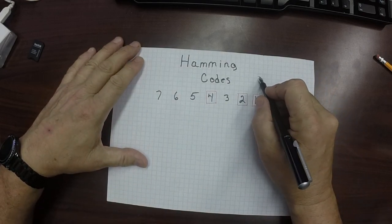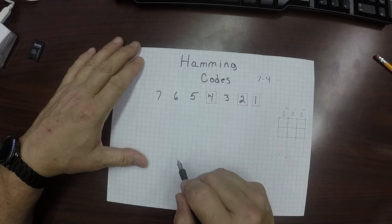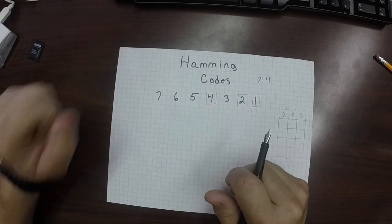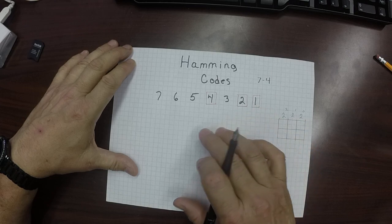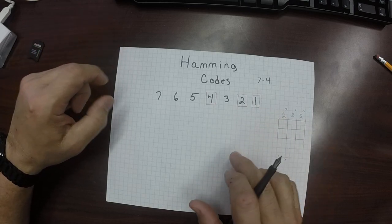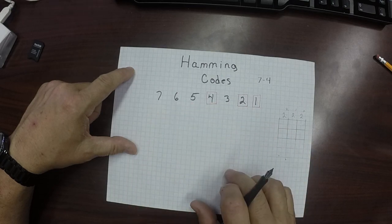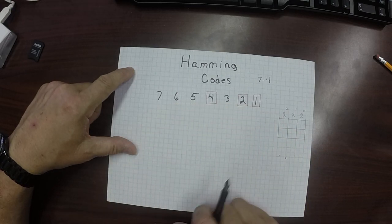So this is an example of a 7-4 Hamming code, and this is how you do it. The first thing you do is number the bits from 1 to 7. I've done it from both left to right and right to left. Hamming himself actually did it from right to left, which is what we have right here: 1, 2, 3, 4, 5, 6, 7.